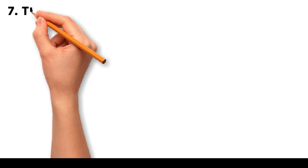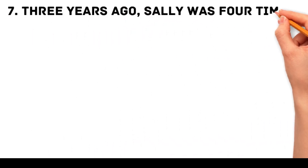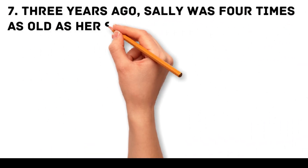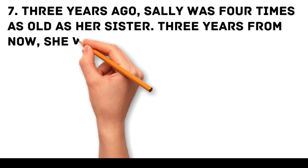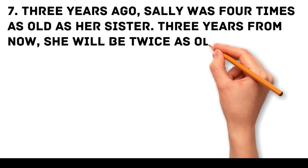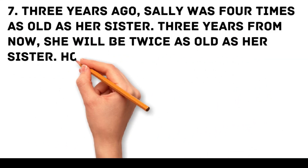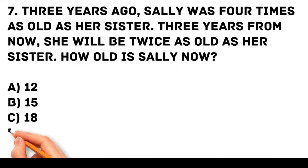Problem 7. Three years ago, Sally was 4 times as old as her sister. Three years from now, she will be twice as old as her sister. How old is Sally now? A. 12, B. 15, C. 18, D. 20.